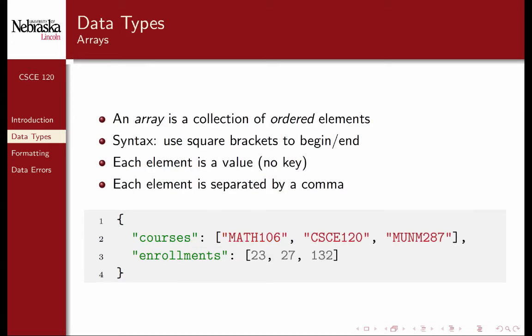An array is a collection of ordered elements. The syntax used in JSON is square brackets to begin and end an array. Each element is a value without a key, and each element is separated by a comma. For example, we have multiple courses — three to be exact — each one is a string, and the first two have commas at the end.